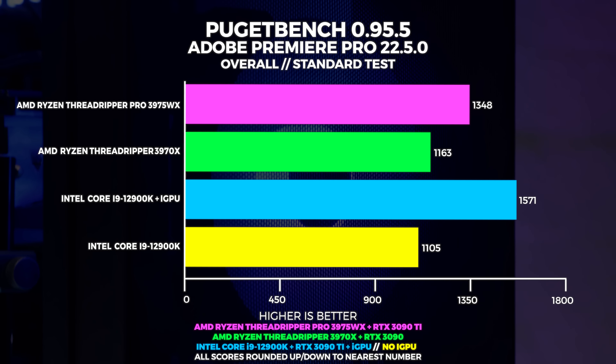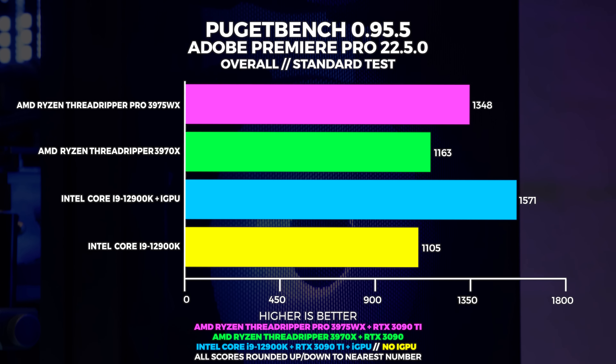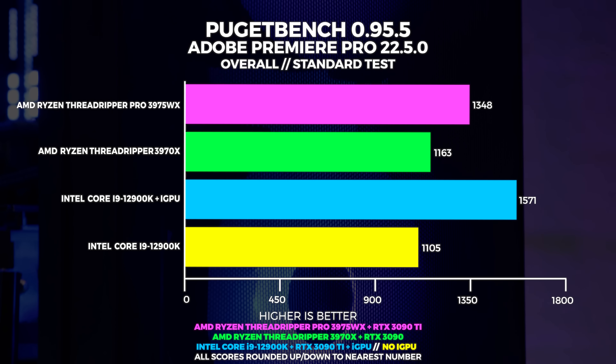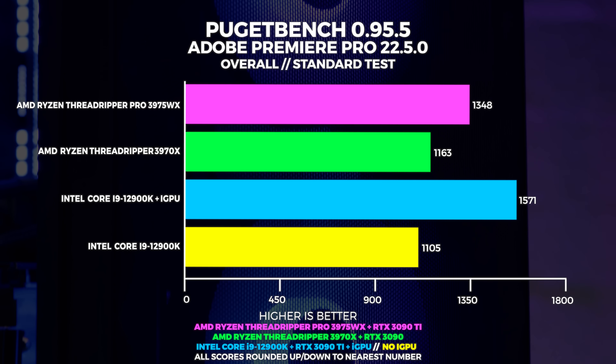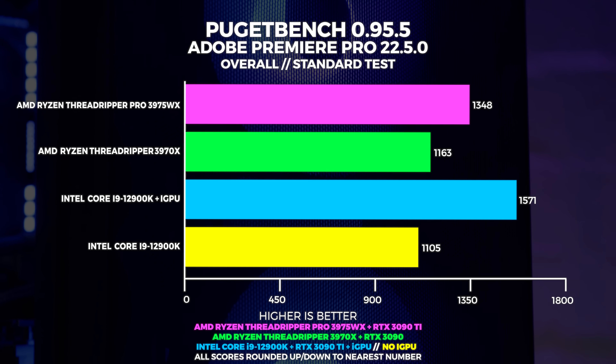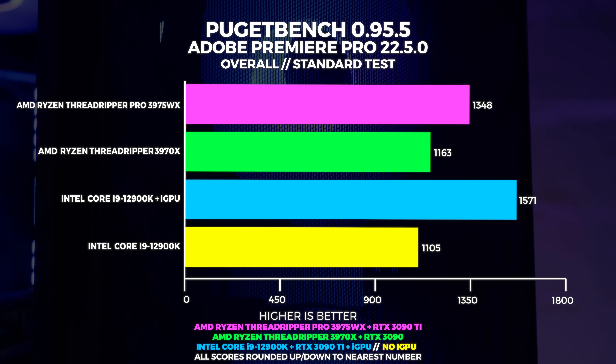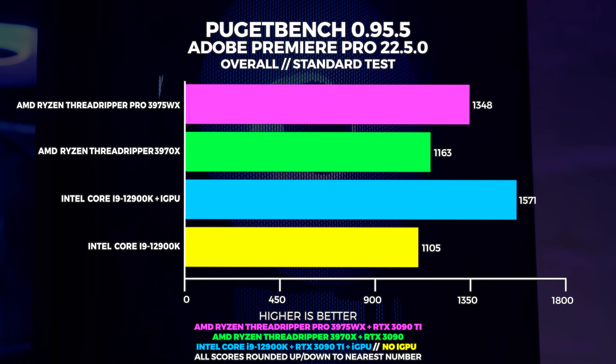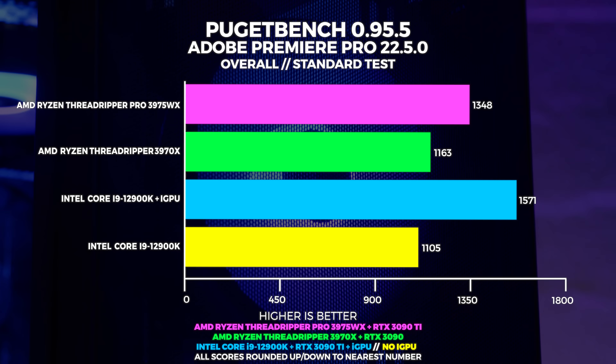My current system, the 3970X Threadripper with a 3090, is beginning to show its age a little. Although my main editing system is significantly undervolted to reduce heat output — that's mainly a quality of life thing because I don't want my office heating up too much, and this is actually something that won't be as unmanageable with Threadripper Pro.